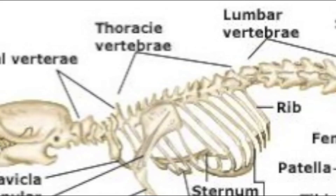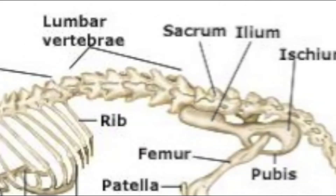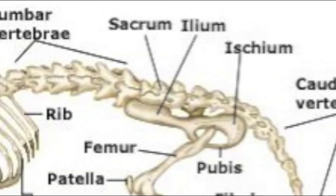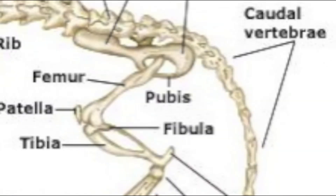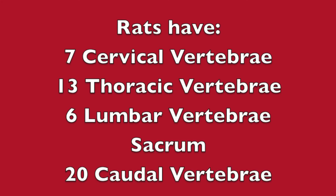Thoracic vertebrae bear ribs. Lumbar vertebrae do not. The sacrum is formed by the fusion of sacral vertebrae. Caudal vertebrae are all in the tail. Rats have seven cervical vertebrae, 13 thoracic vertebrae, six lumbar vertebrae, a sacrum, and 20 caudal vertebrae.